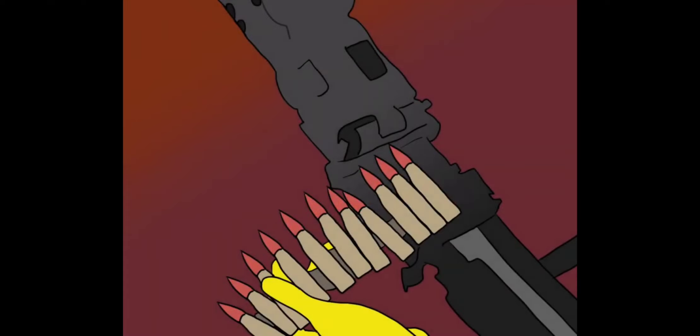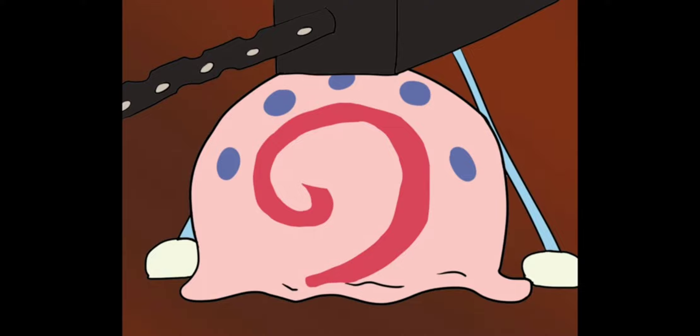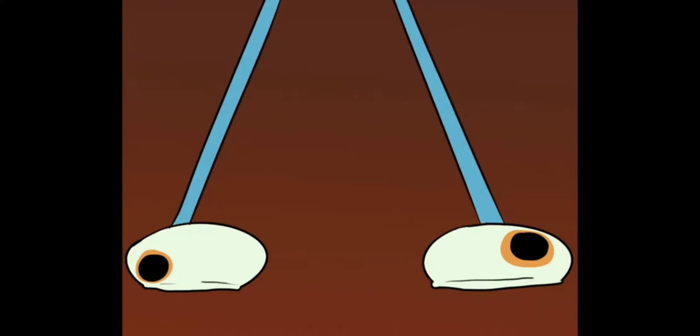SpongeBob took a deep breath as he loaded his MG34 Browning machine gun. His friends Patrick, Sandy and Gary. Poor Gary, all lost to this green hell.